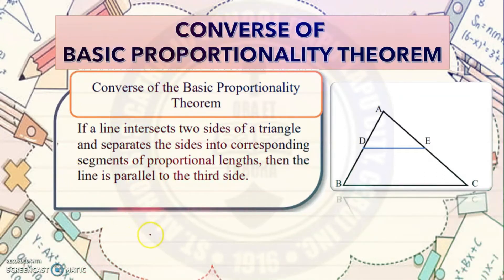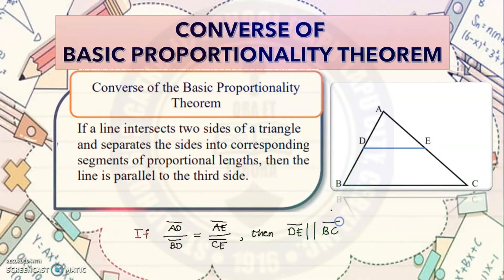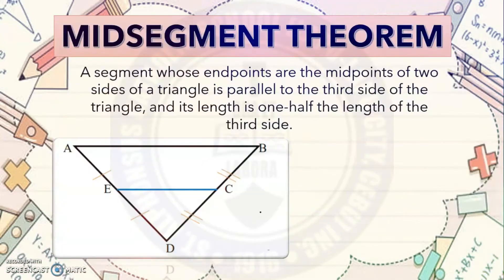based on the converse of the Basic Proportionality Theorem, we can say that if AD over BD equals AE over CE, then DE is parallel to side BC. So this is another way of expressing the relationship.